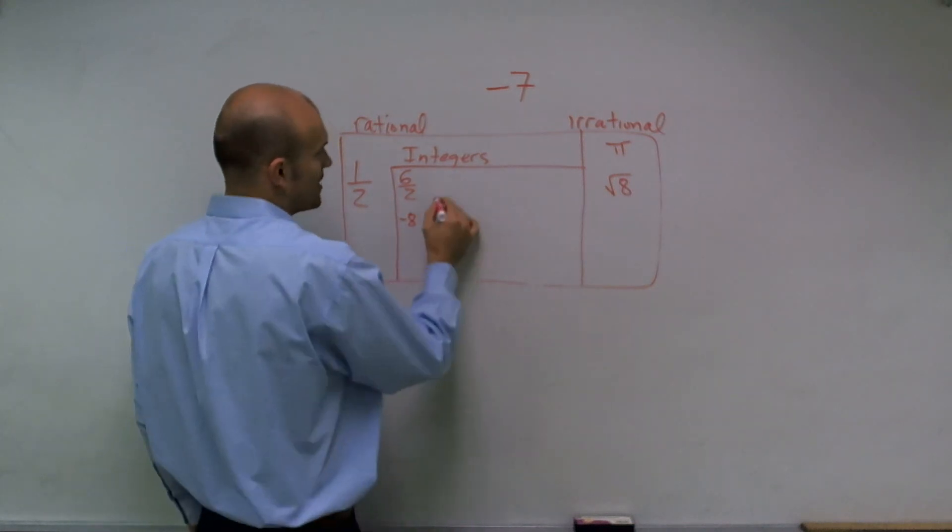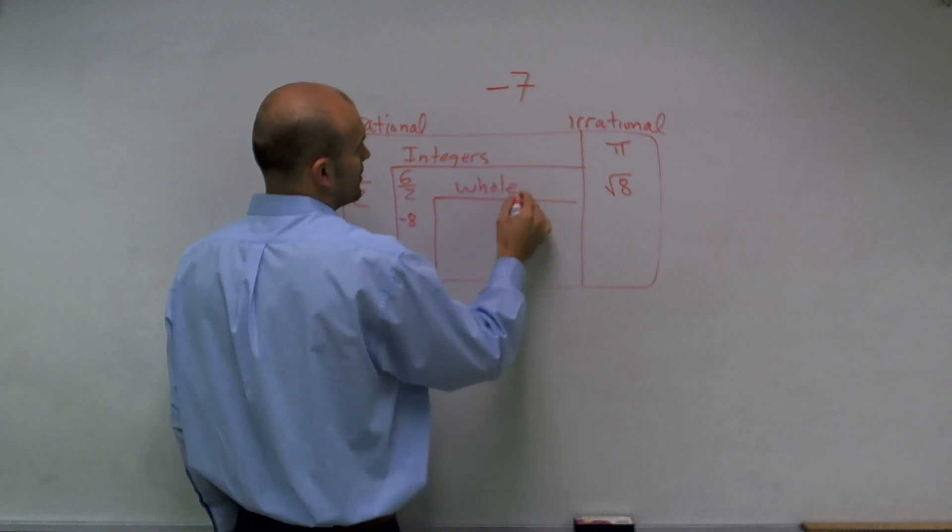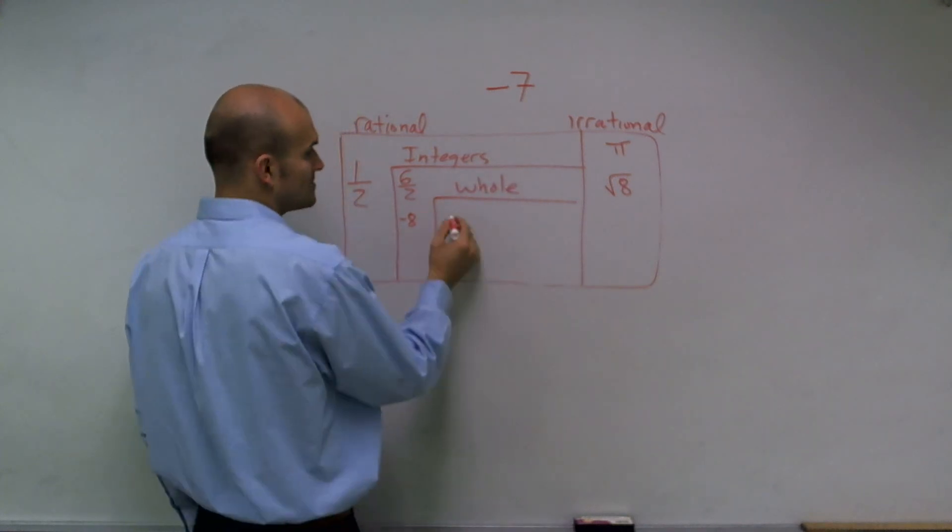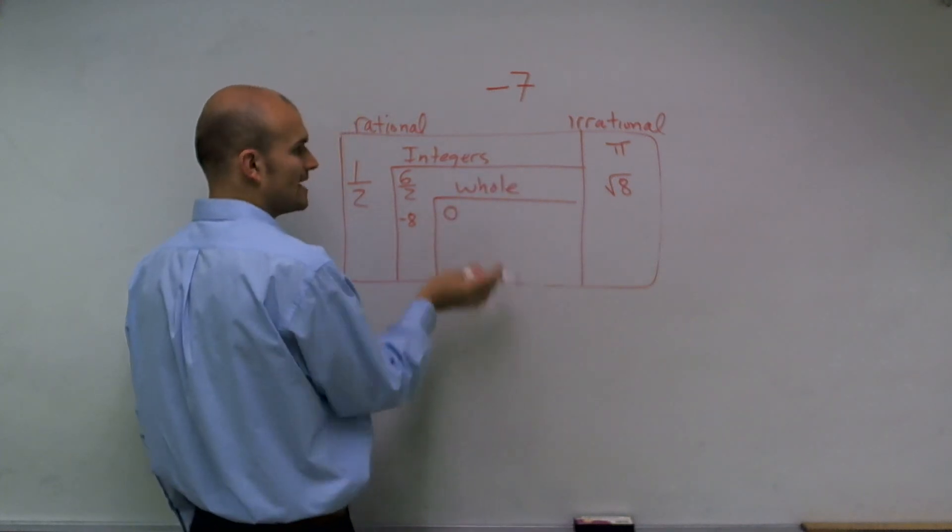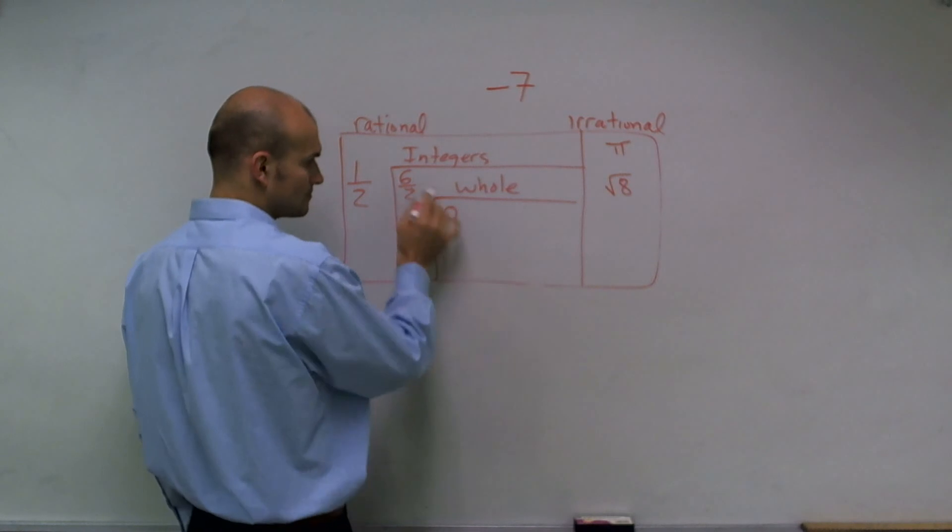Because our next set of numbers are whole numbers, which are just like the other ones, but they include the point 0 as integers would as well.